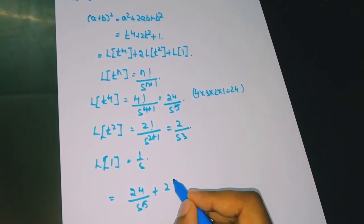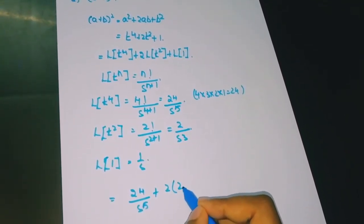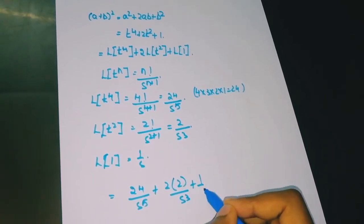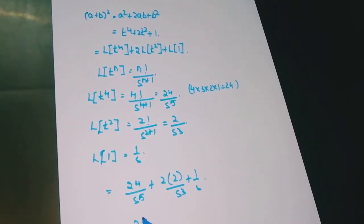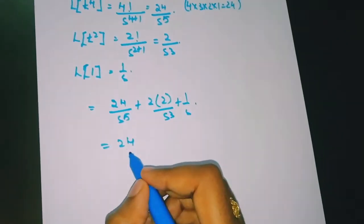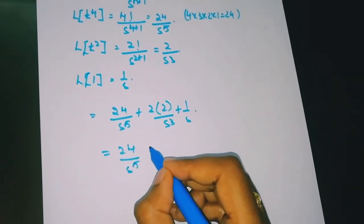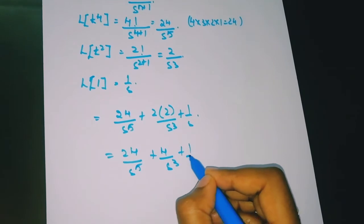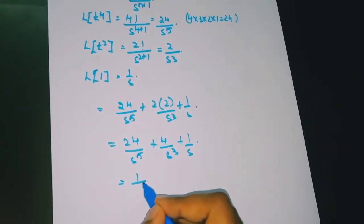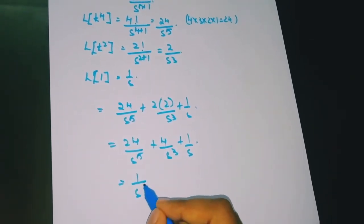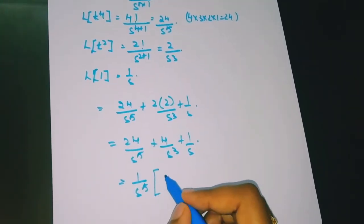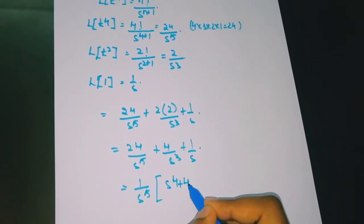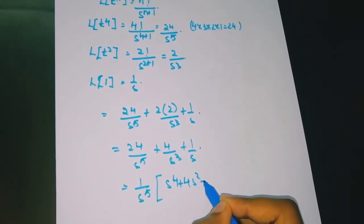Combining: 24/s⁵ + 4/s³ + 1/s. Taking s⁵ as common in the numerator: (24 + 4s² + s⁴) / s⁵.